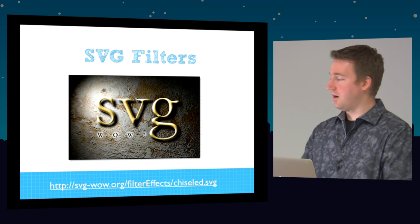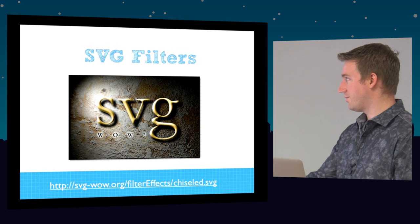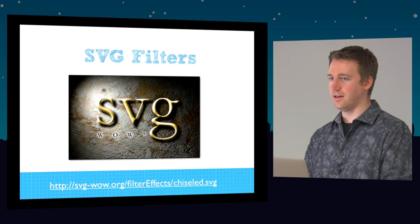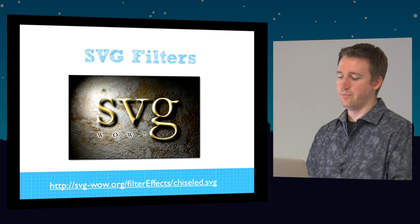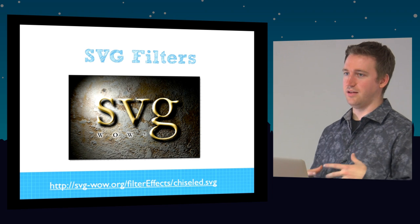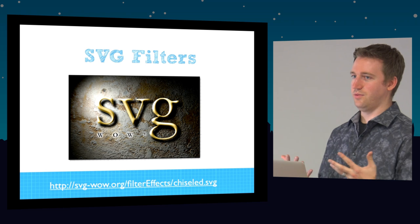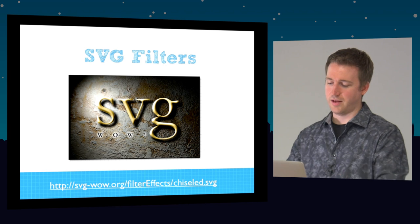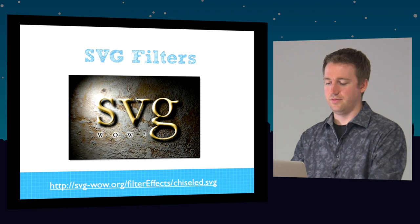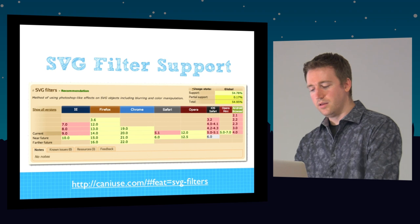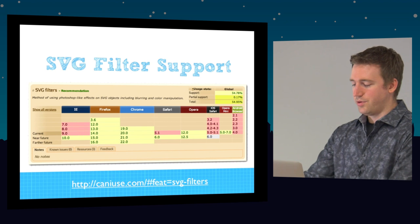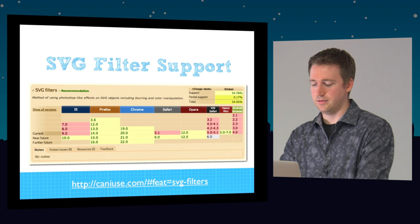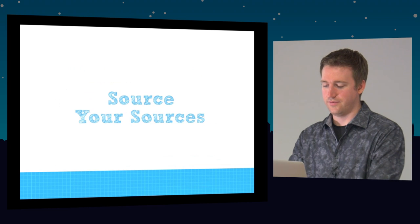SVG filters are coming out. This example was built with SVG filters — basically like Photoshop filters. You can take vector elements and have different kinds of filters applied to them, just like Photoshop: take an element, apply a filter, and it changes the look of the elements. Filter support is not too bad — we have it in quite a few browsers, but IE10 and Safari 6 are a bit of a issue.